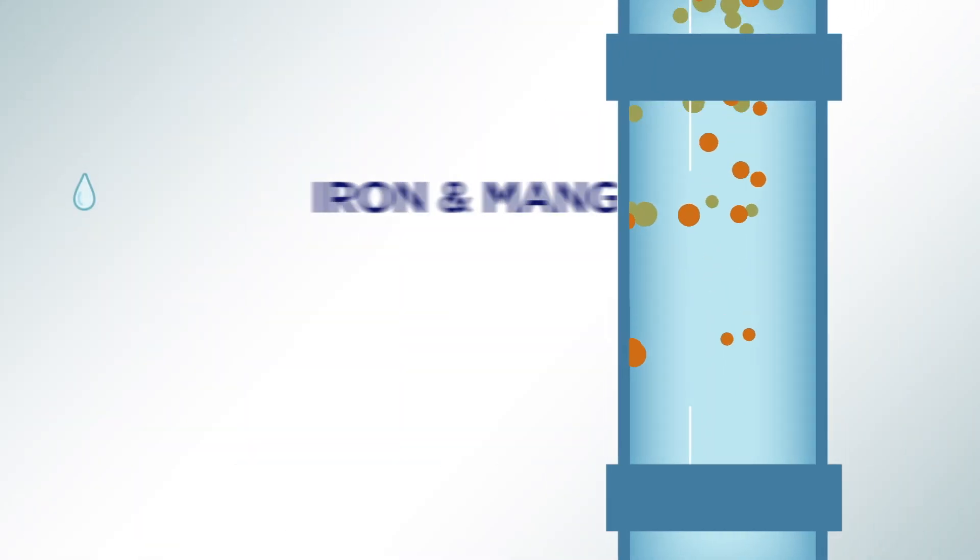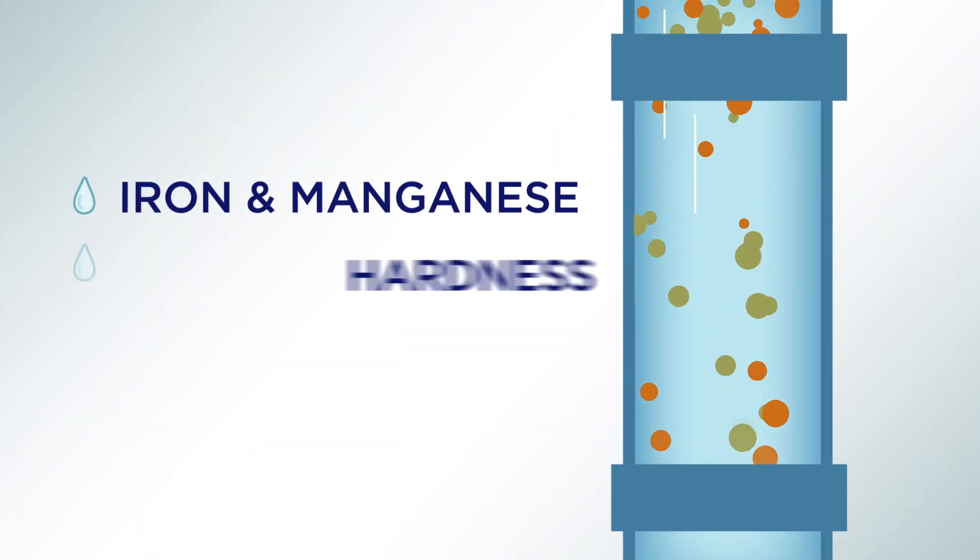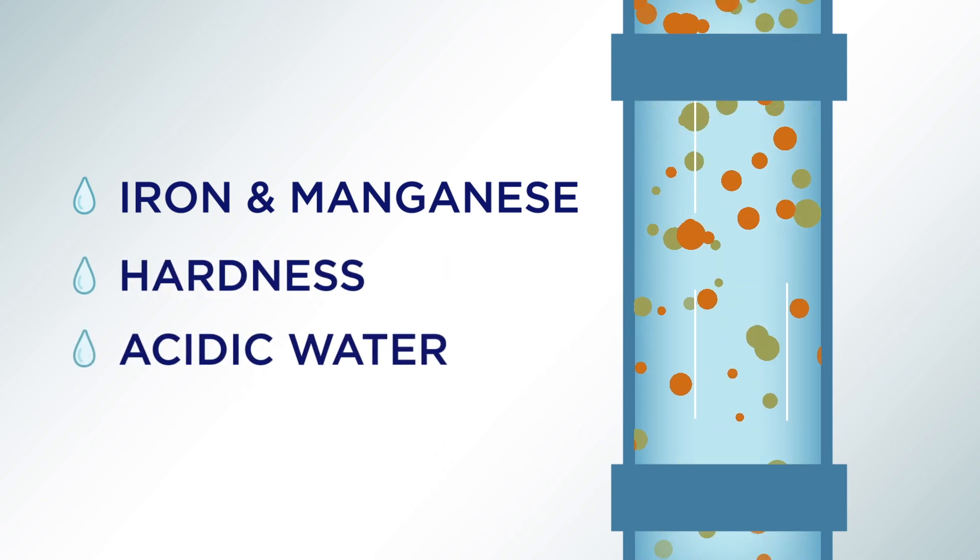Crystal Rite has the ability to remove iron and manganese, reduce hardness, and help neutralize acidic water that causes corrosion, doing three jobs at once.